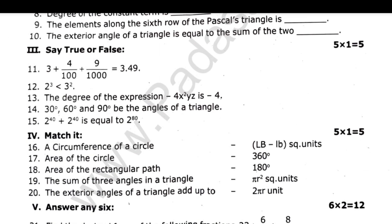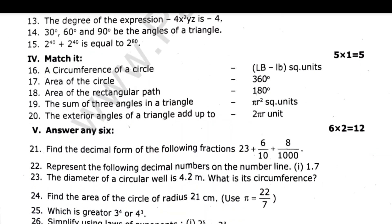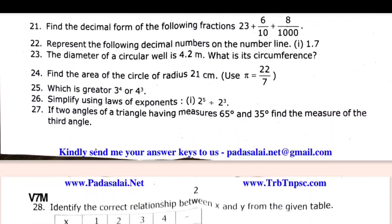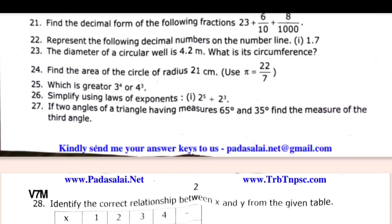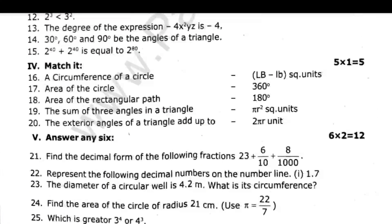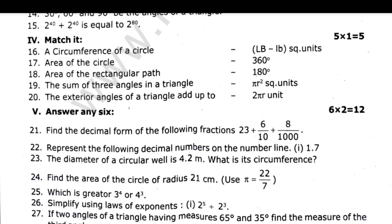Next, choose 2-mark section — 6 twos are 12. If you want to take a total of 9, you will have 6. Find the area of the circle of radius 21 cm. Which is greater — 3 power 4 or 4 power 3?